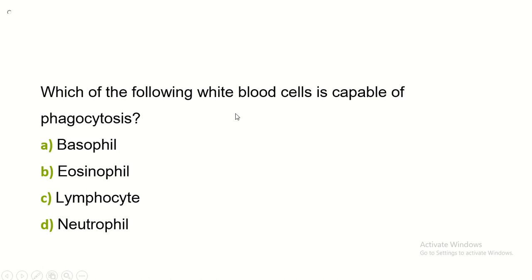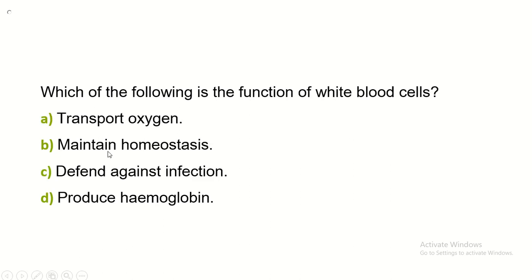Which of the following white blood cells is capable of phagocytosis? Options: basophil, eosinophil, lymphocyte, or neutrophil? The answer is neutrophil. Which of the following is the function of white blood cells? Options: transport oxygen, maintain hemostasis, defense against infection, or produce hemoglobin? The answer is defense against infection.